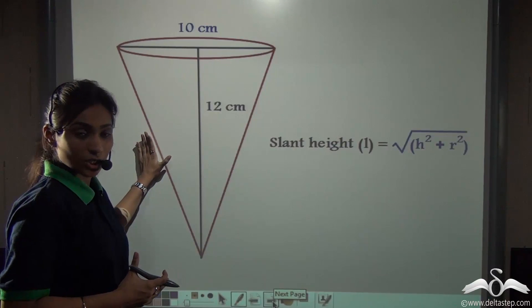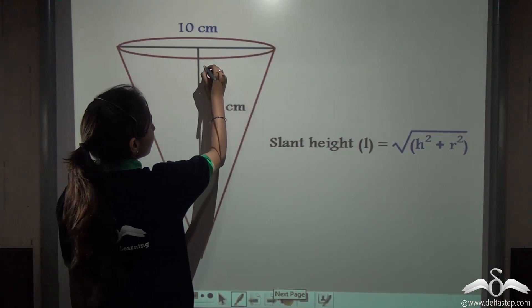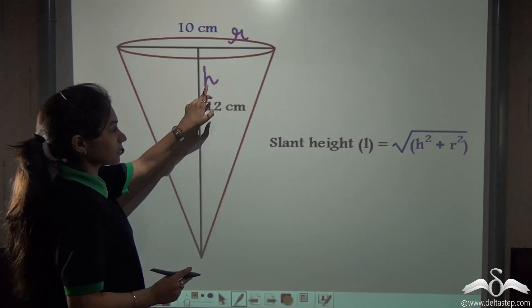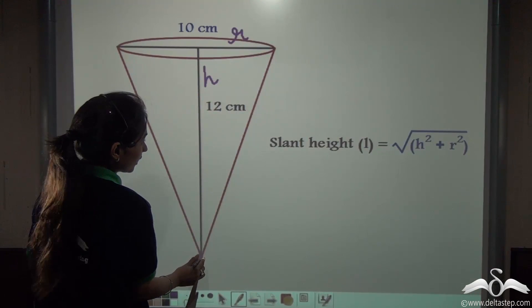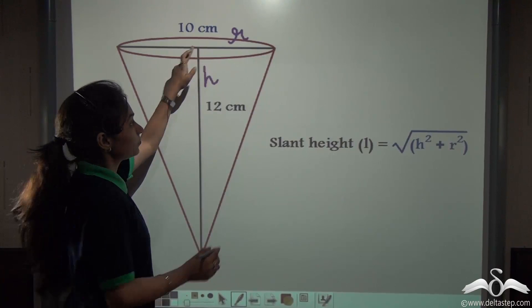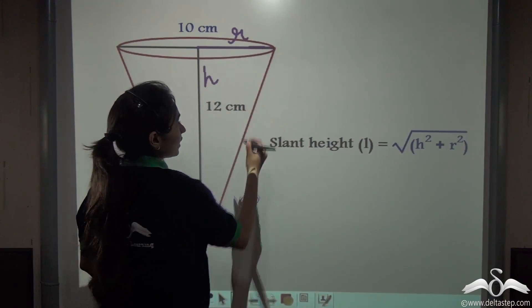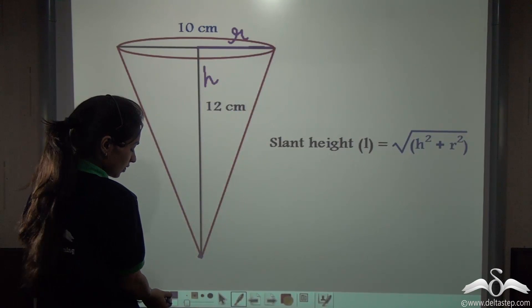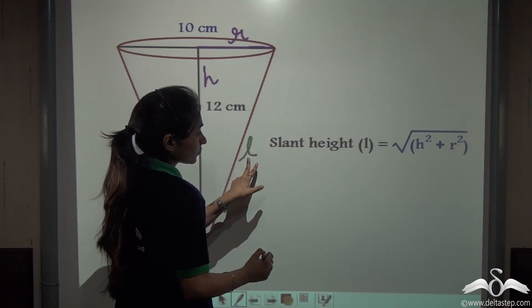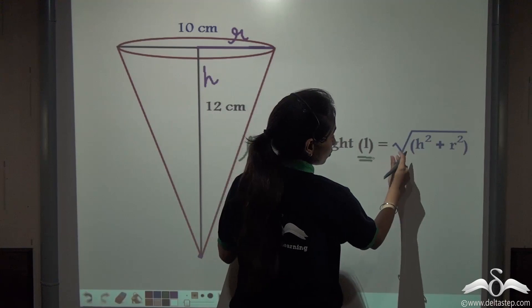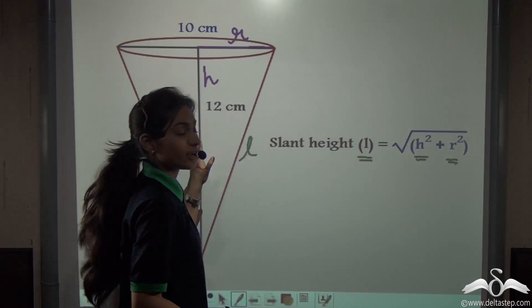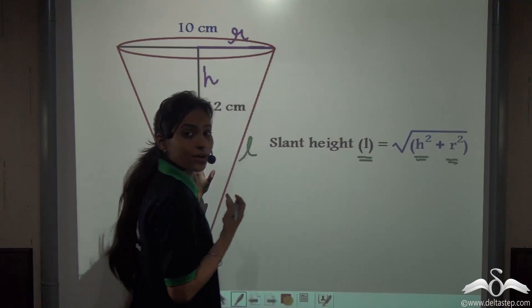So what did we study? We studied that for a right circular cone, if the height and the radius are given — where height is the distance between the vertex and the centre of the circle — then we can easily find the slant height of the cone. If the slant height is L, then L equals the square root of H squared plus R squared, where H is the height of the cone and R is the radius of the cone.